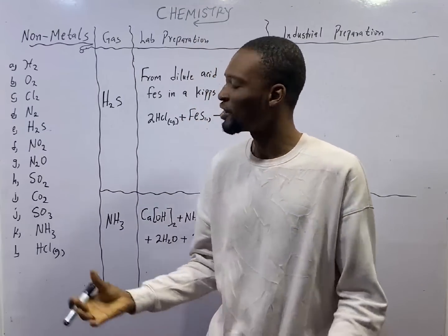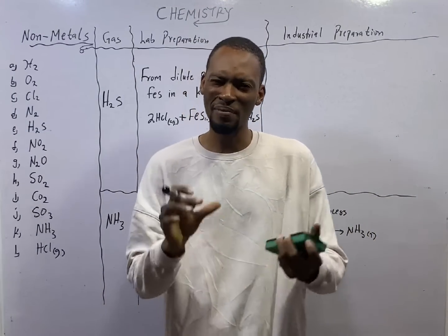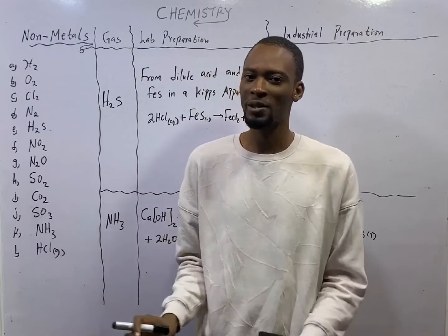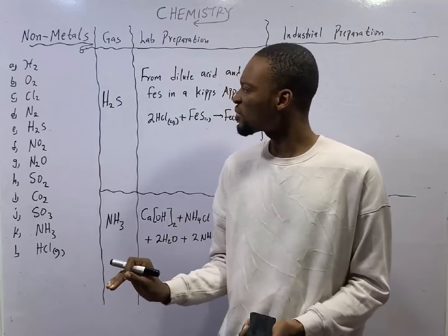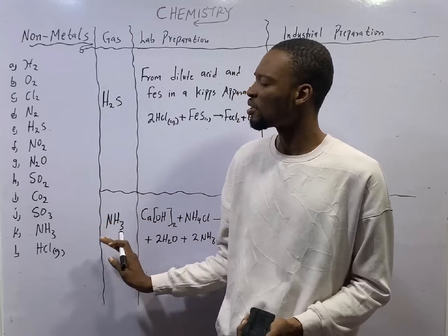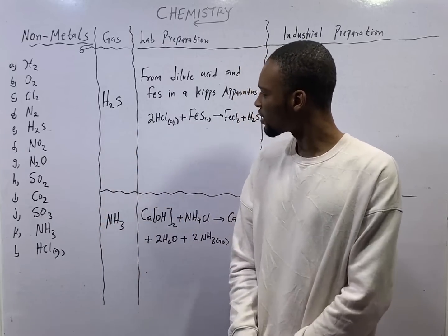This is episode number 47 of the 120 Days to JAMB Chemistry with Flash Isaac. In this episode, we shall be looking at preparation of hydrogen sulfide and preparation of ammonia gas.